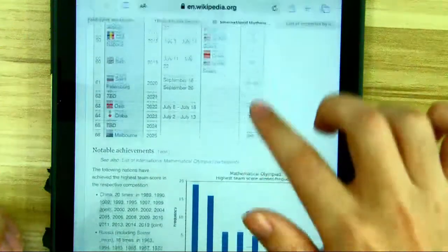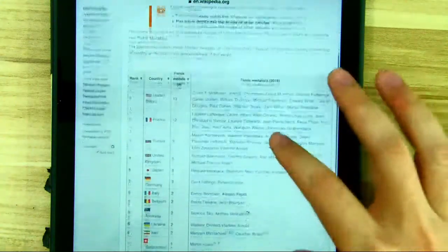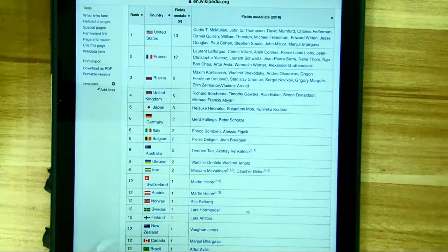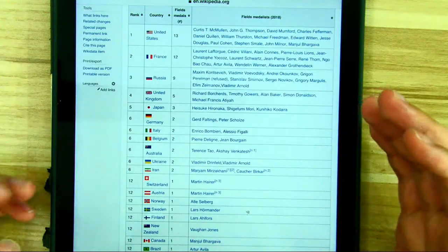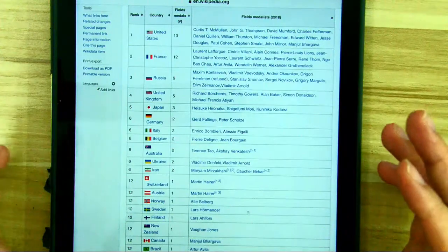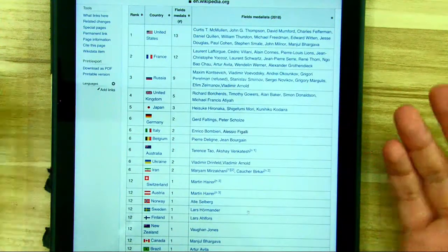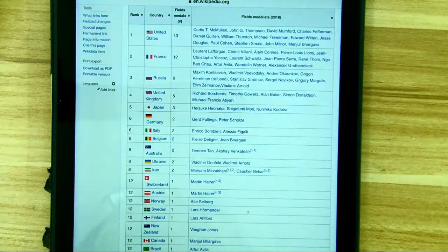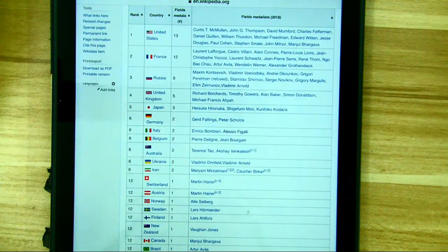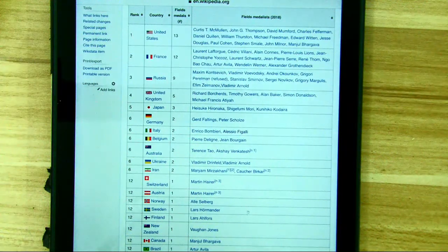And the third result is the Fields Medal. Actually, the Fields Medal goes to the mathematicians contributing a lot to the math research field. They are exploring new math tools for us human beings to use for other fields like natural sciences, computer sciences, economics and finance, and so many other applications.